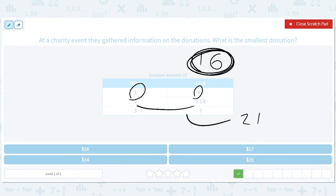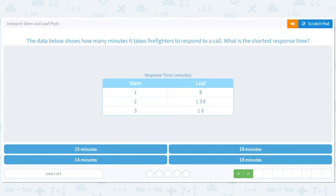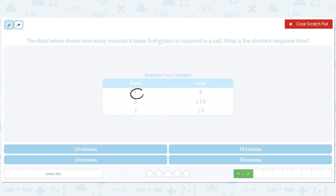Actually just got a call this morning about donating to the children's leukemia foundation, so maybe this is a sign that I should. The data below shows how many minutes it takes firefighters to respond to a call. What is the shortest response amount of time? All right, this is fun, it's pretty relaxing, right? Just one, eight. Small stem, there's only one leaf there, so these firefighters were fast. They got there in 18 minutes.